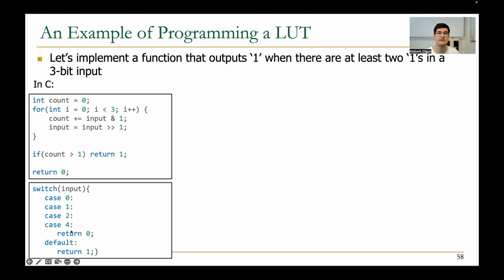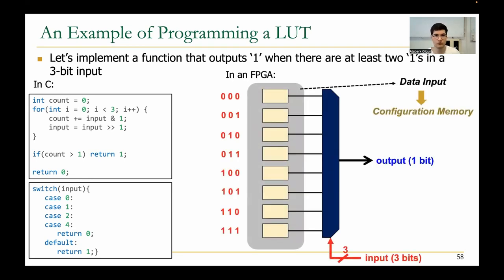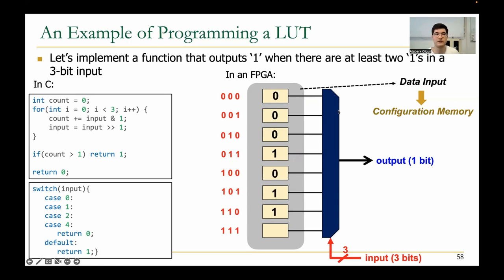If the input is 0, 1, 2, or 4 — meaning fewer than two ones in the three-bit input — you return zero; otherwise you return one. The lookup table implementation fills in the data input according to the switch-case statement. If the three-bit input is all zeros, we output zero. Similarly for inputs one and two, we output zero since there's only one bit set. When the input is three — meaning two ones — the output becomes one. We continue filling the cells according to what we expect the function to return, and thus we have implemented our function using a lookup table.